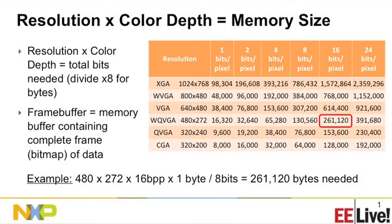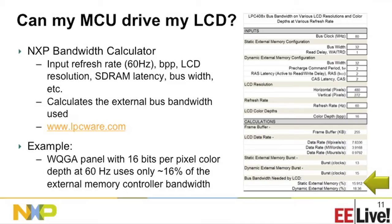You might double-buffer, so you'd need roughly twice as much memory. For bandwidth through the external bus, if you're using one of our micros, we give you a handy Excel bandwidth calculator. You plug in your refresh rate, bits per pixel, LCD resolution, and SDRAM latency. You can have a 16-bit or 32-bit external bus — there are choices there. In this case it comes out to about 16% utilization using a 32-bit bus and the LPC4088, leaving a lot of bandwidth left over to do other things in your system.